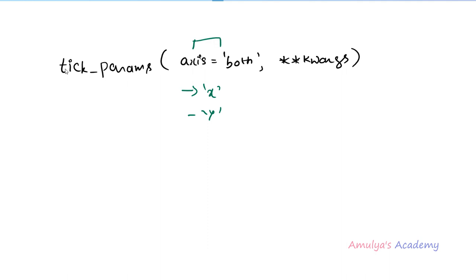If you take axis as x and change the appearance of the ticks, the ticks present in the x-axis will be changed. You can choose the axis on which you want to operate — the default value is both. Using keyword arguments we are changing the appearance of the ticks, labels, and grid lines. Let's see which keyword arguments we can use here.